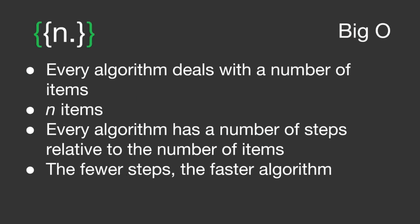Here's the thing with algorithms. Every algorithm deals with a number of items. We call this number n. Every algorithm has a number of steps relative to the number of items. Therefore, the fewer steps makes a faster algorithm.